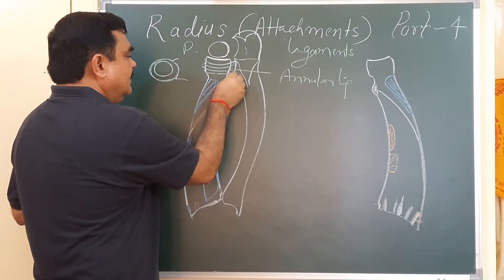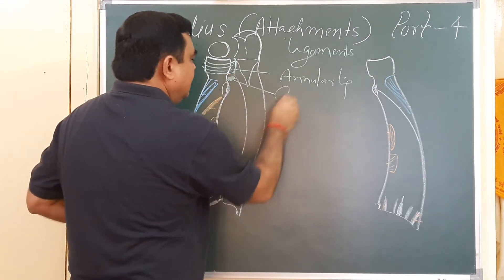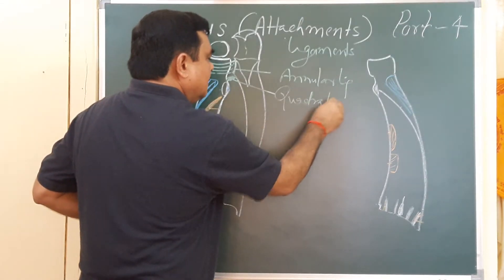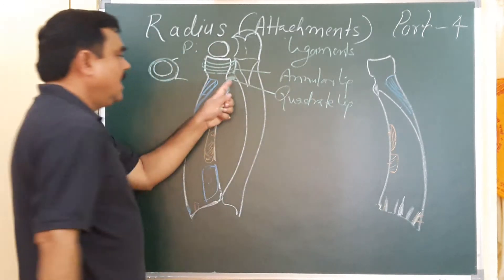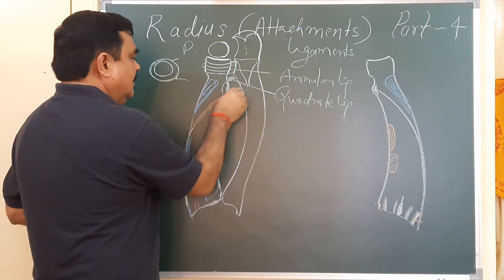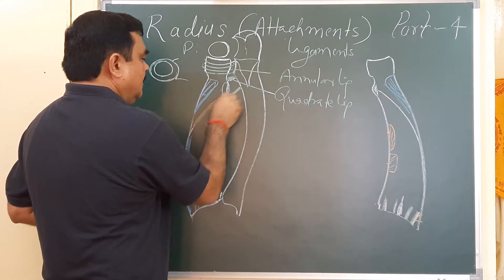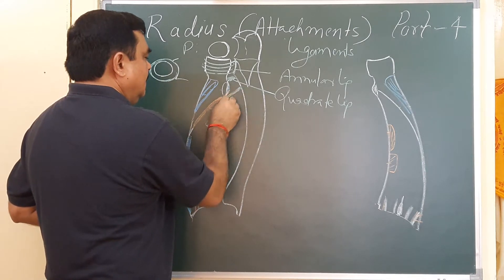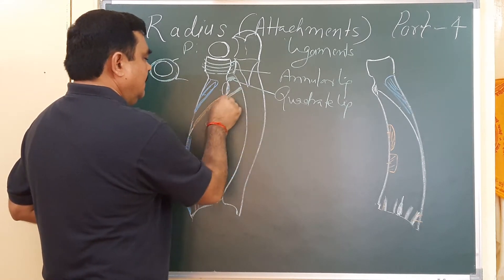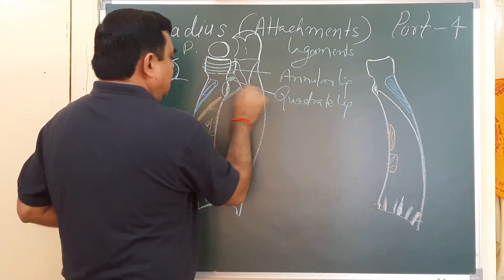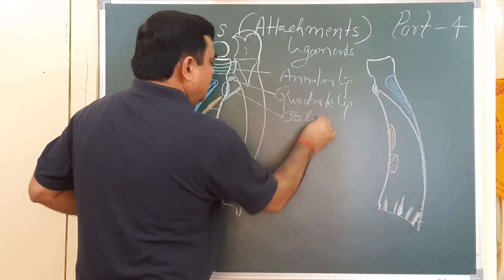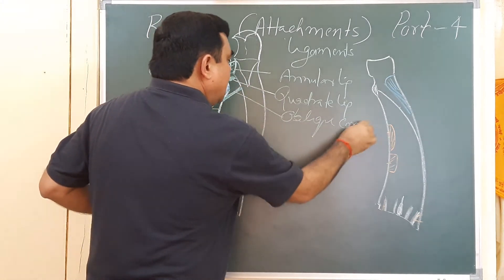This is the quadrate ligament, attached here. And here, this is the oblique cord.